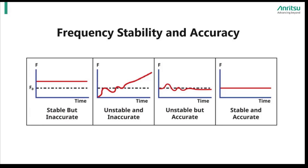In the first plot, we have a stable signal, but it lacks accuracy. Stable in the sense that it does not deviate about the frequency f, but simultaneously inaccurate as it should be stable around the nominal frequency f0.